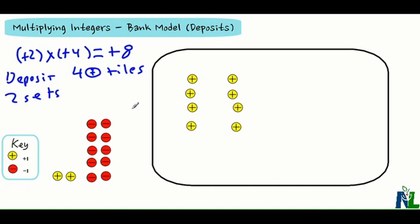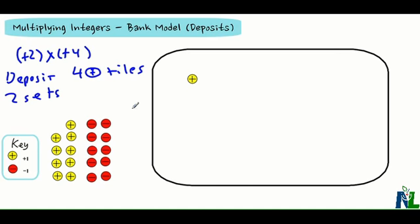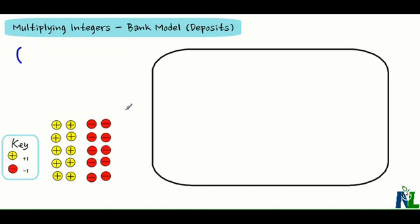Let's try positive 2 times negative 4. I'll just back this out here. Because I have positive 2, I'm still depositing two sets.